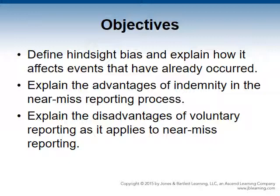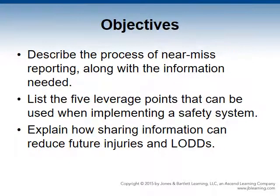Explain the advantages of anonymity in the near-miss reporting process. Explain the disadvantages of voluntary reporting as it applies to near-miss reporting. Describe the process of near-miss reporting along with information needed, list the five leverage points that can be used when implementing a safety system, and explain how sharing information can reduce future line of duty deaths.